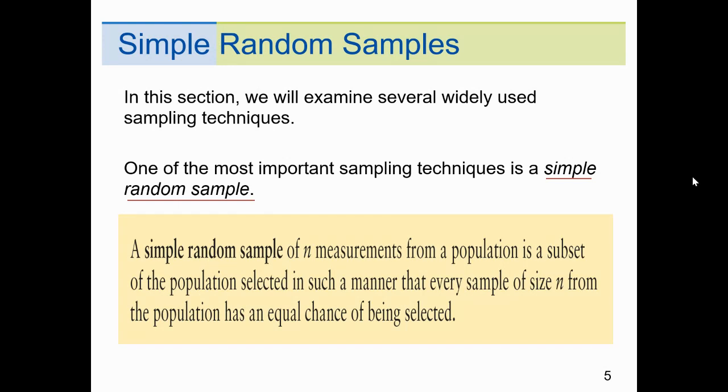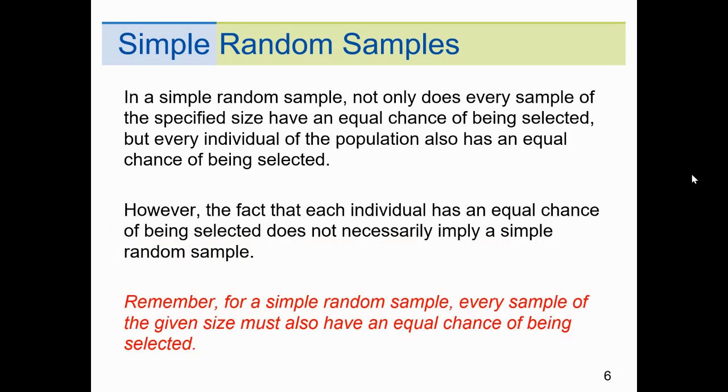In this section, we examine several widely used sampling techniques. One of the most important is simple random sample, sometimes referred to as SRS. A simple random sample of N measurements from a population is a subset of the population selected in such a manner that every sample size N from the population has an equal chance of being selected.